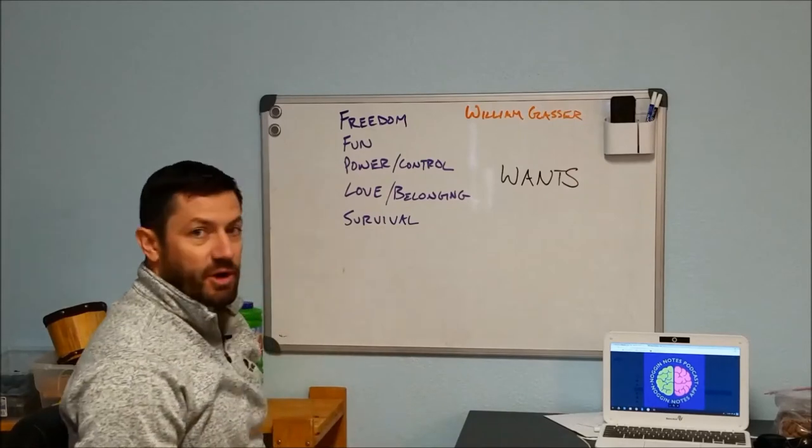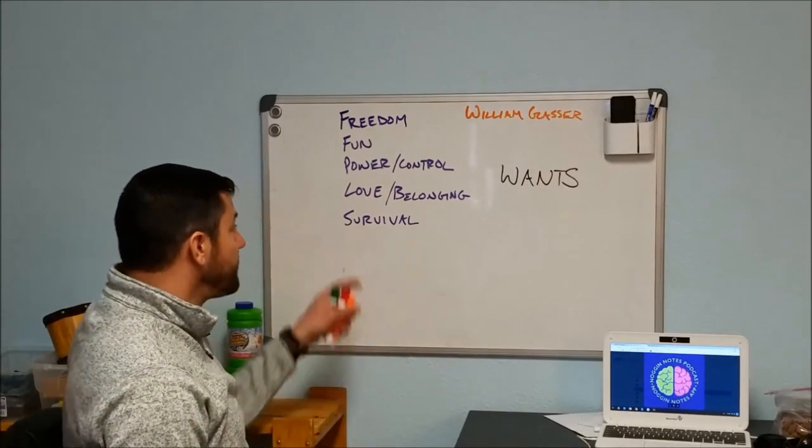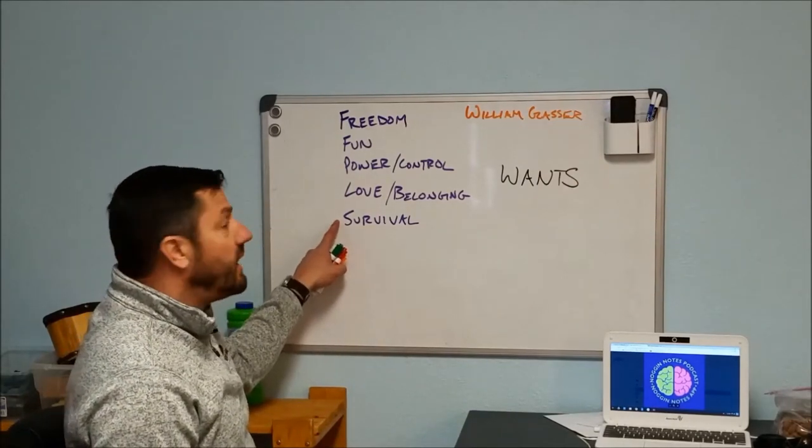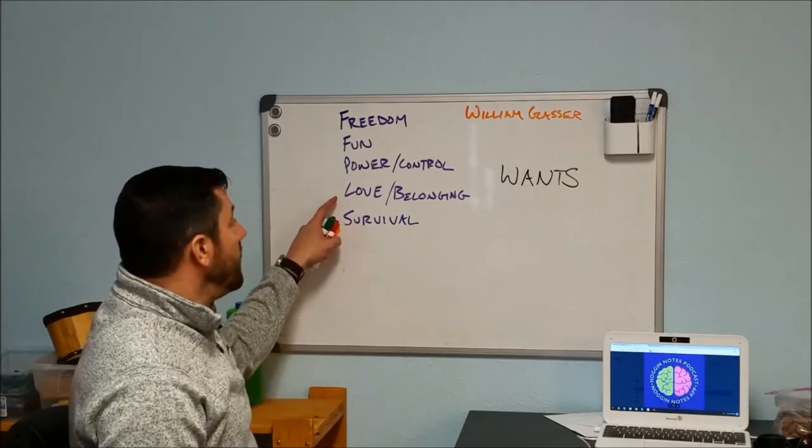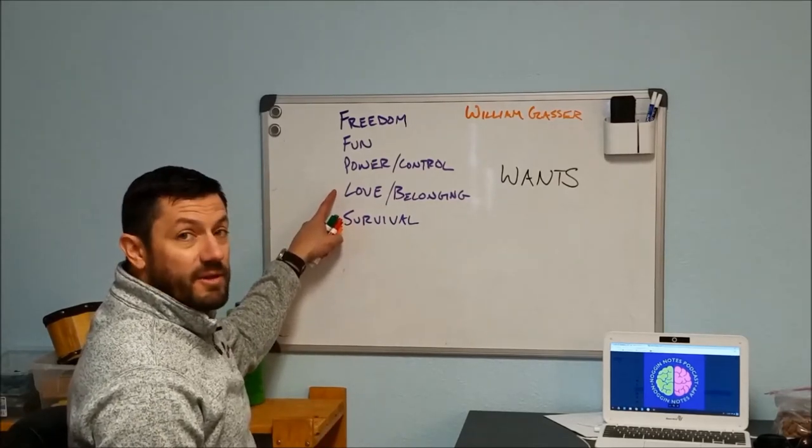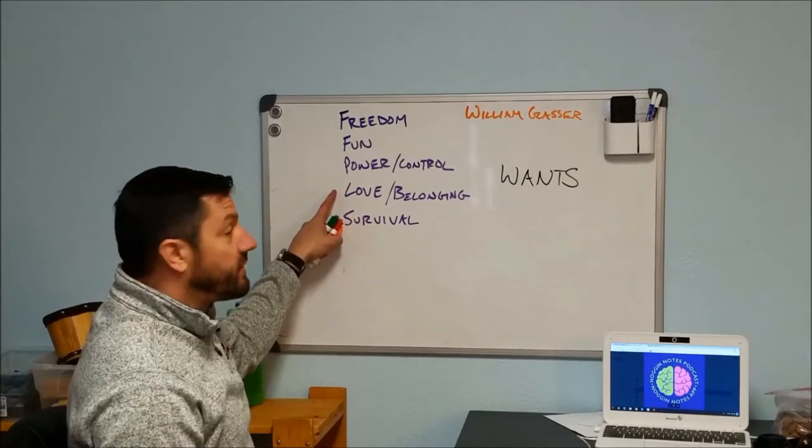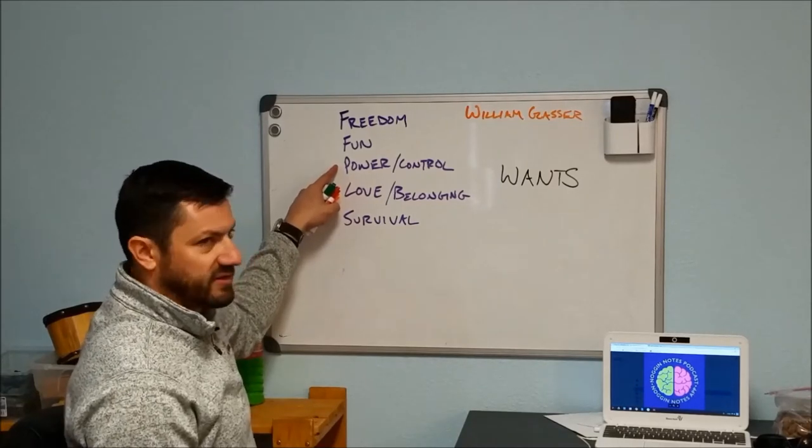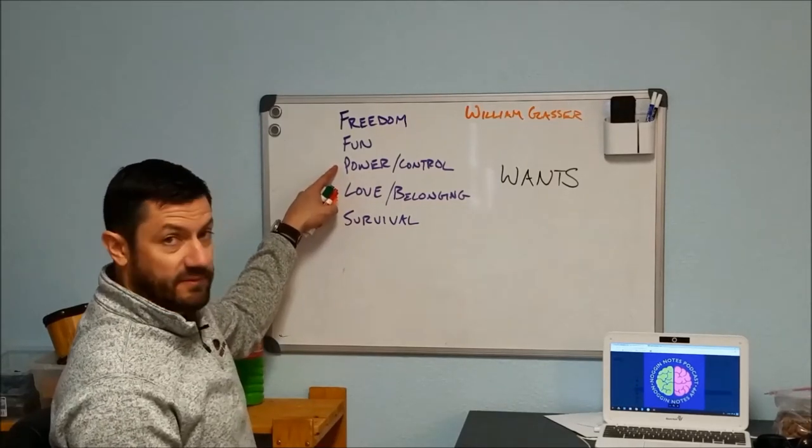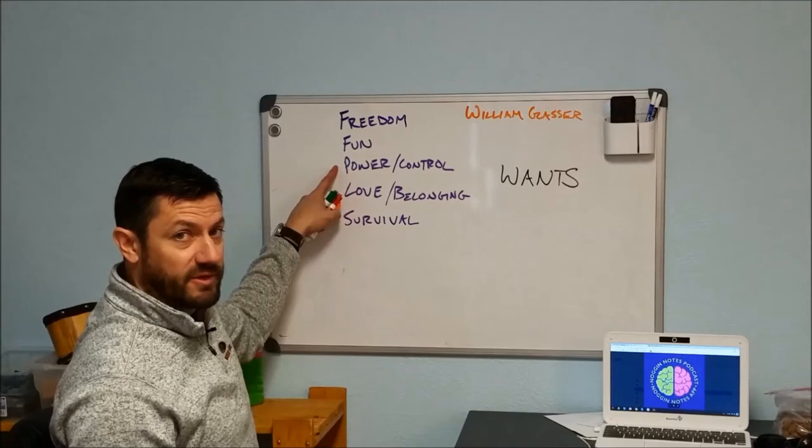The way that we get these needs met is through something called our wants. If I want a cheeseburger, it's certainly going to meet my survival need. That's going to help me sustain life. It may help me meet my love and belonging need if I'm eating a cheeseburger with friends.